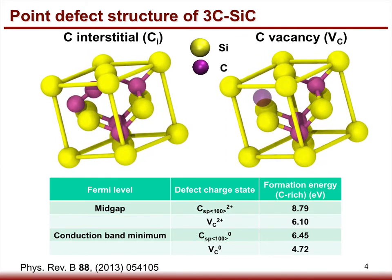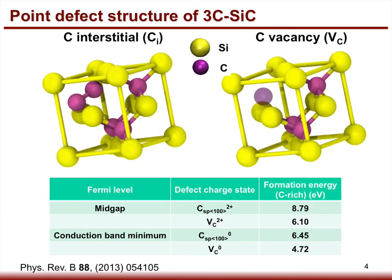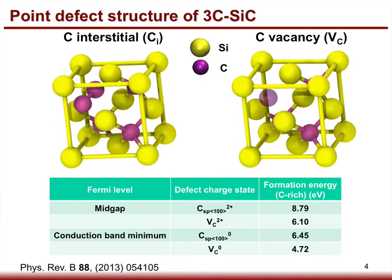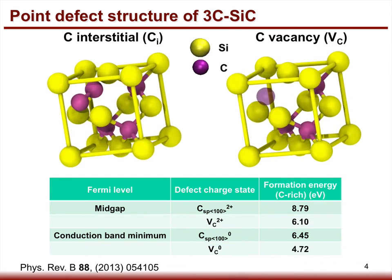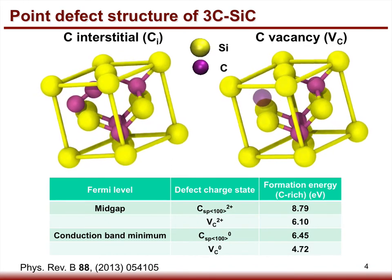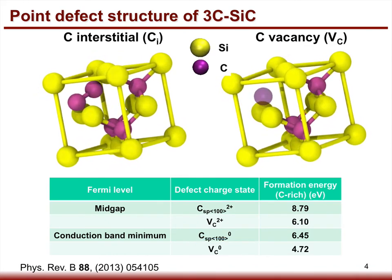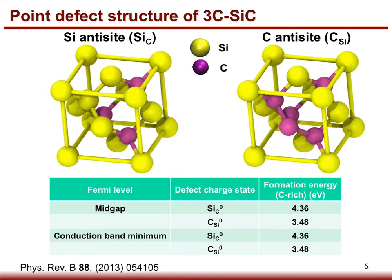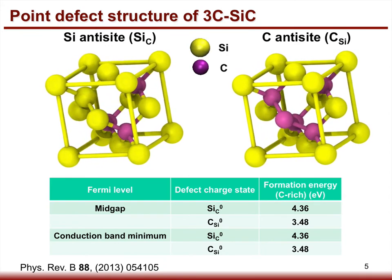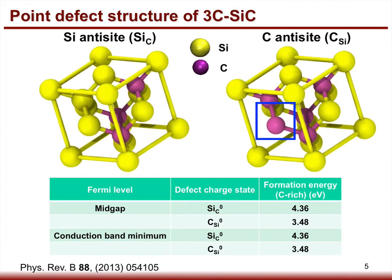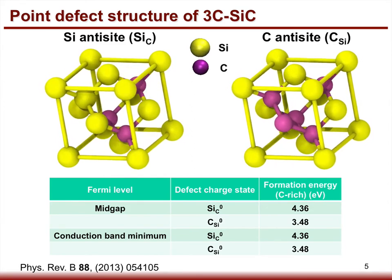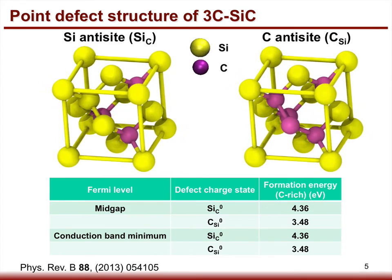The carbon interstitial has different stable charge states at different Fermi levels. At mid-gap, the stable charge state is 2+, while at the conduction band minimum it is neutral. Carbon vacancy behaves similarly: 2+ at mid-gap and neutral at the conduction band minimum. If a silicon atom sits at a carbon lattice site, it forms a silicon antisite, while if a carbon atom sits at a silicon lattice site, it is a carbon antisite. Both antisites have stable neutral charge states at mid-gap and the conduction band minimum.